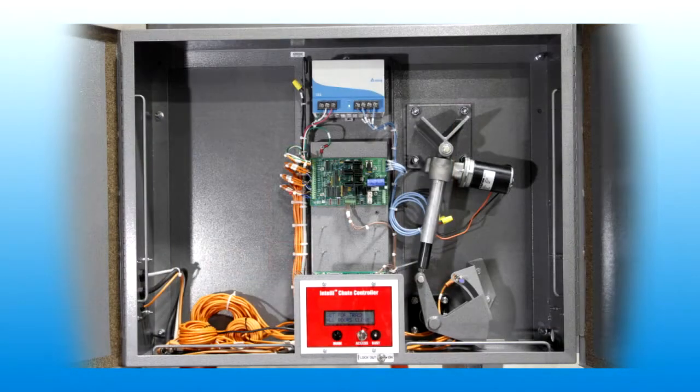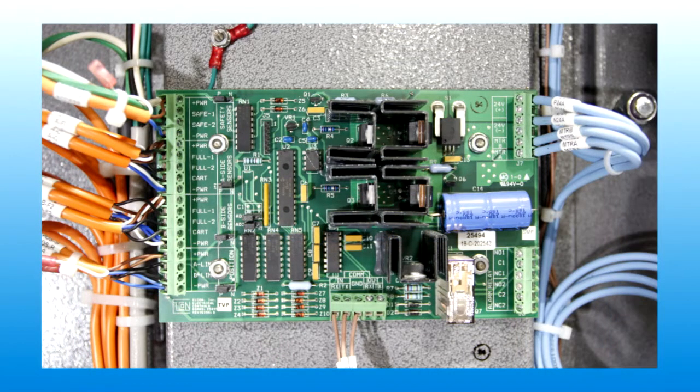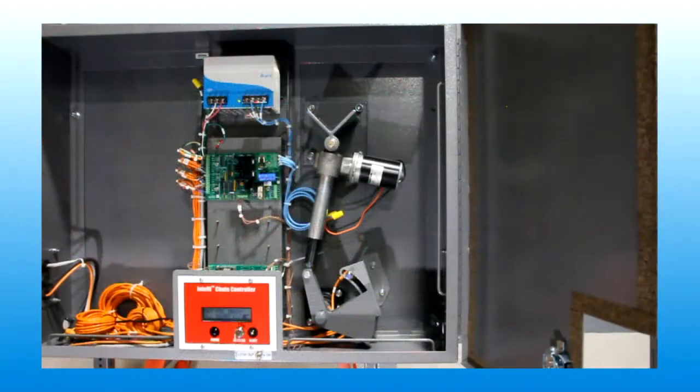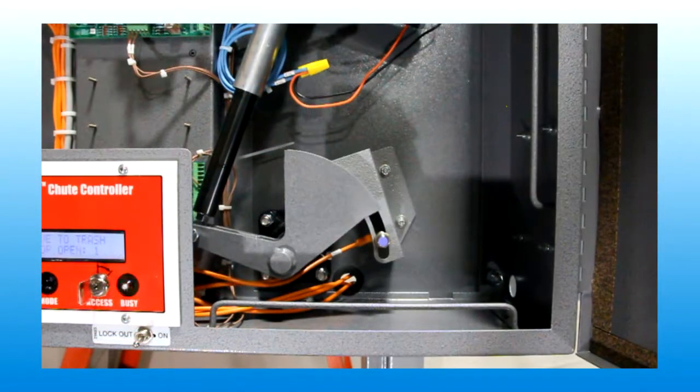The main components inside the enclosure are a low voltage DC power supply, control system electronics, the diverter mechanism actuator motor and position sensors.